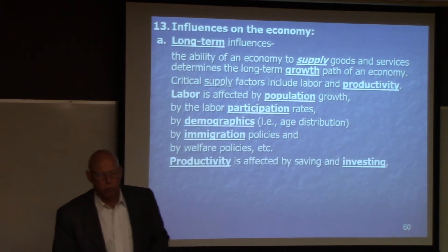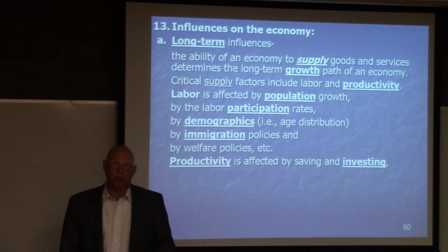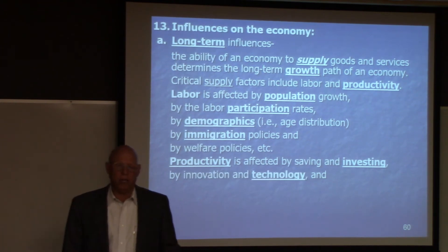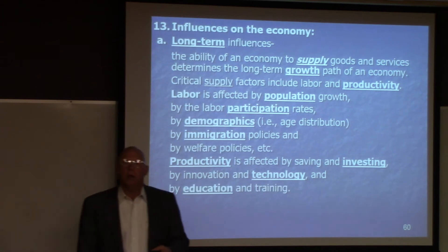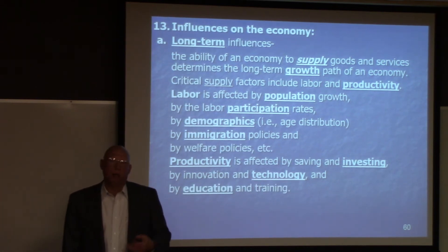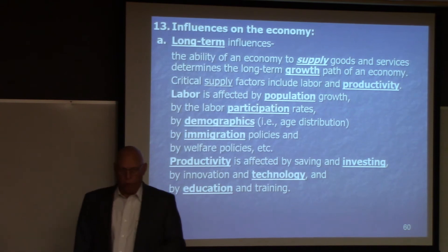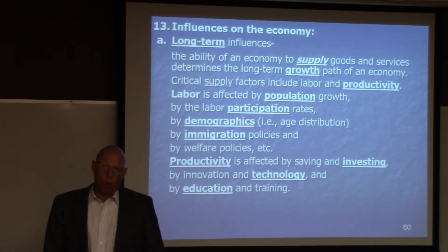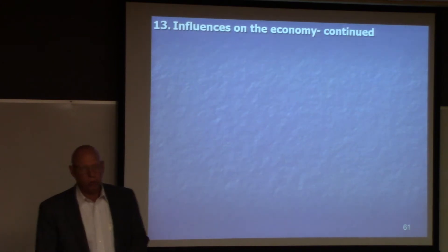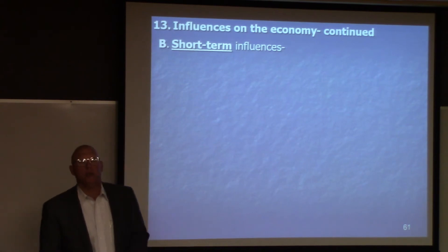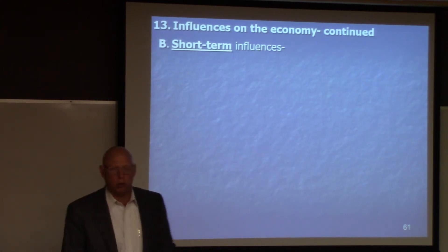Now let's look at productivity. Productivity is affected by saving and investing. The more saving we have, the more investing we do. The more investing we do, the more innovation and technology we have, and the more education and training we have. These are things that affect productivity: saving, investment, innovation, technology, education, and training. This makes our people more productive. So you have to have workers and you have to have productive workers — these are the long-term influences on the economy.